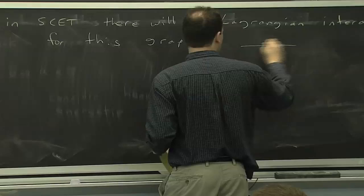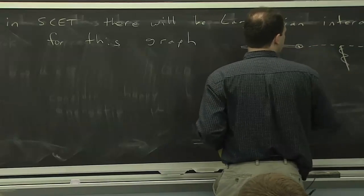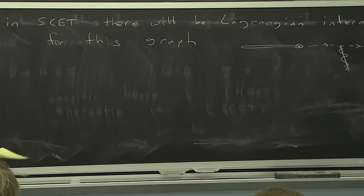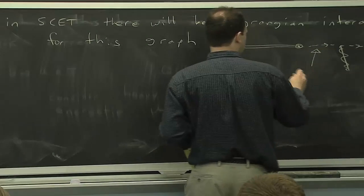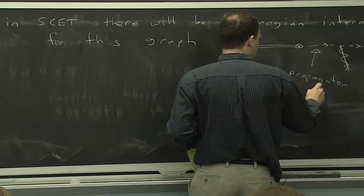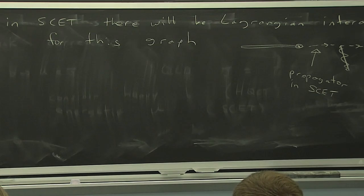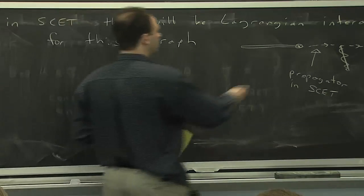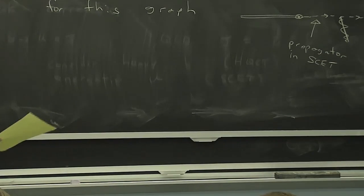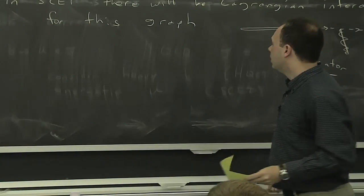So in the effective theory, there will be an effective theory diagram that allows us to attach that gluon, because this propagator is a propagator in the effective theory. Unlike the previous one, which was off-shell and had to be integrated out, this one is inside the effective theory. So adding a gluon on the left is different than adding one on the right — when we add on the left, we knock the quark off-shell; when we add on the right, it stays close to mass-shell.